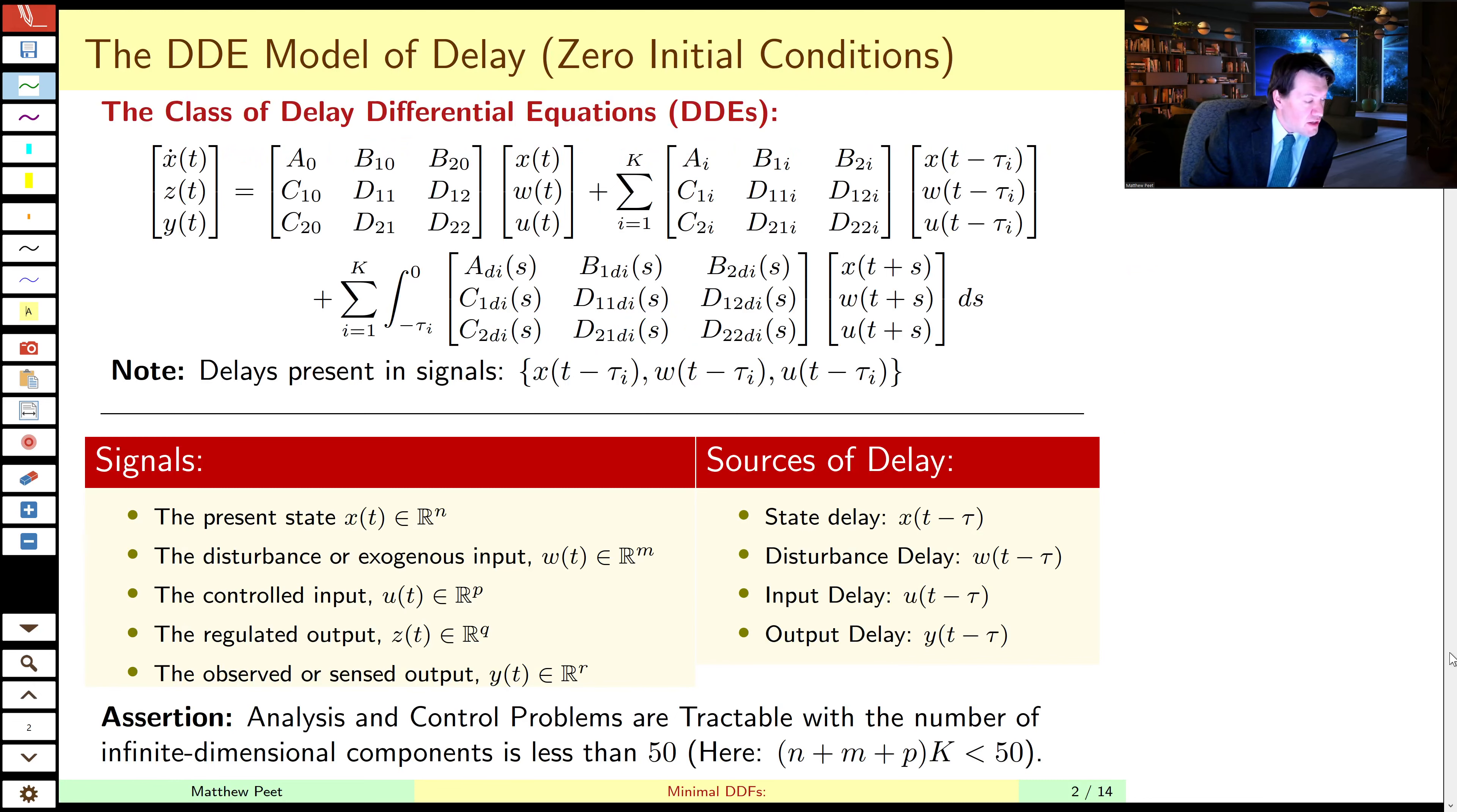So if you start at the question of representation, the standard representation of a time delay system is the delay differential equation, where it's parameterized by nine parameters, which represent the ODE dynamics of the system. But then each delay also has nine possible ways it can affect the dynamics. So in particular, for each delay, there's nine parameters,